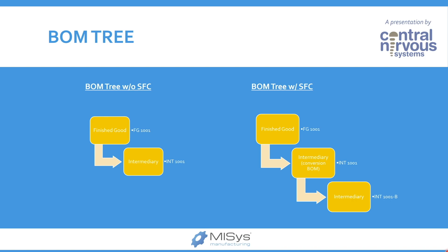Without shop floor control it becomes a bit easier because the finished good and intermediary — or intermediaries depending on how many sub-assemblies are fitting into finished goods — is a single layer. Those intermediaries might have their own sub-assemblies, but there is nothing in between. Whereas in a BOM tree with shop floor control, we might require a conversion BOM — a ghost BOM as we call it.